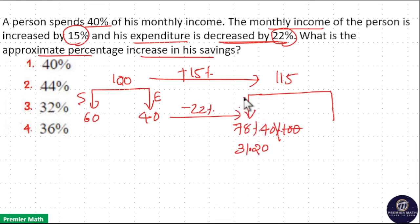So, new expenditure is equal to Rs. 31.2 out of this Rs. 115 income, new income. Now, remaining is equal to his savings which is Rs. 115 minus Rs. 31.2. So, Rs. 115 minus Rs. 30 is equal to Rs. 85. Rs. 85 minus Rs. 1.2 is equal to Rs. 83.8.